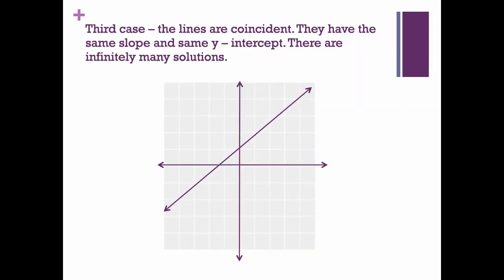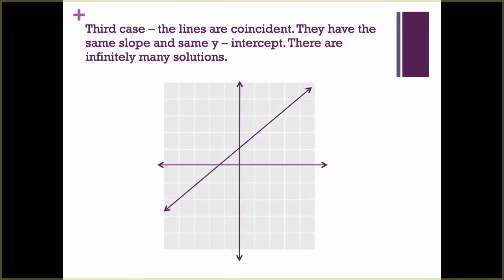Our last possibility is that the lines are what we call coincident — this means the lines are on top of each other. Basically, it's the same line graphed twice. This means they have the same slope and the same y-intercept. When they're on top of each other, there are infinitely many solutions. Lines are infinite — they go on forever — so we have infinite solutions. When you have the same line, you need to write 'infinite solutions,' and it's even better to add that it's the same line.